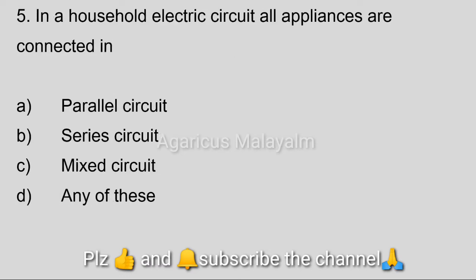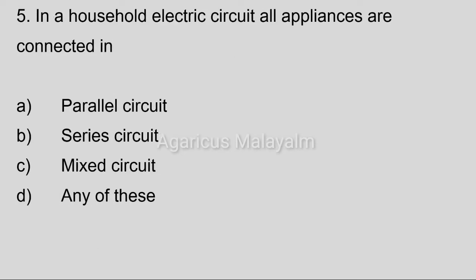Fifth question: In a household electric circuit, all appliances are connected in — Option A: parallel circuit. Option B: series circuit. Option C: mixer circuit. Option D: any of these. Correct answer: Option A, parallel circuit.